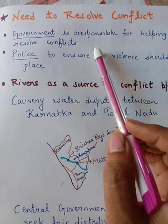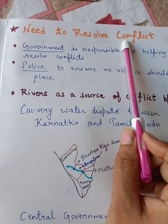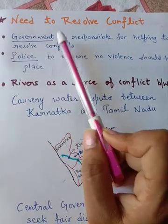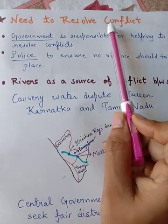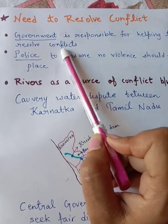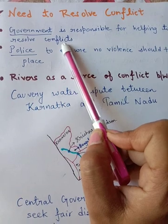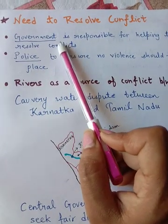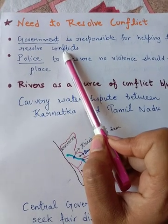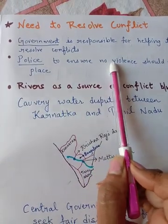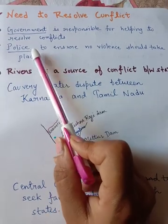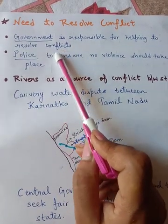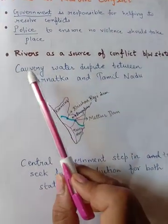Next is the need to resolve conflict. 'Resolve' means to solve, and 'conflict' means dispute. It is the responsibility of the government to help resolve conflict. Conflict arises in India because people of different religions and cultures live together. Government passes laws so that all people live in harmony. Police also play an important role to stop violence and ensure no conflict takes place.